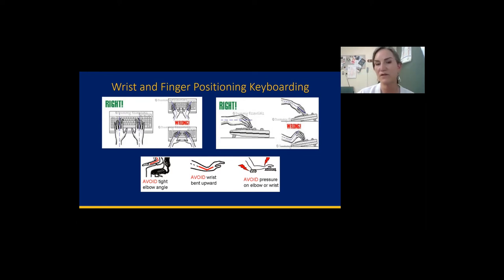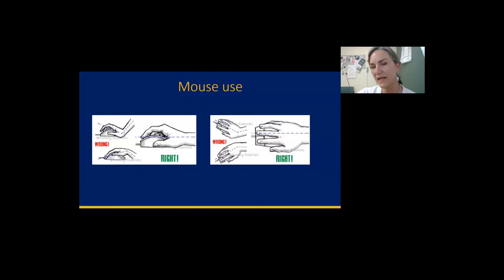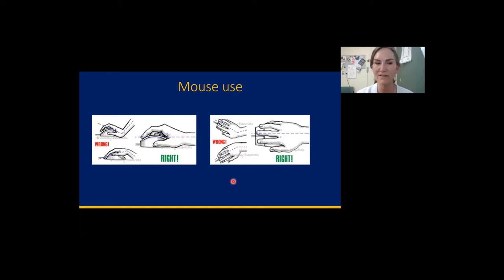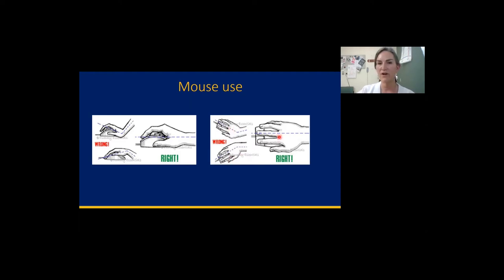Mouse use is another big area of concern. You can have your wrists too far in extension or flexion, but you want that same straight line when holding the mouse. Avoid over-gripping the mouse, and use your shoulder to move it instead of your wrist going from side to side. Think about using the biggest muscles possible instead of the tiny finger and wrist muscles.